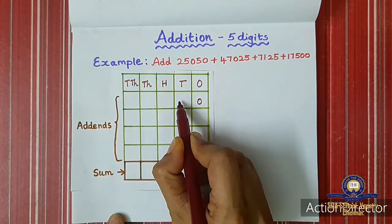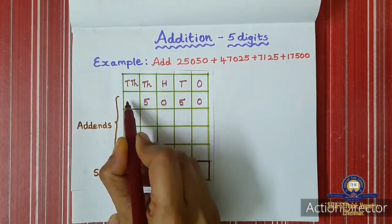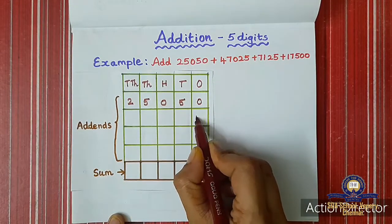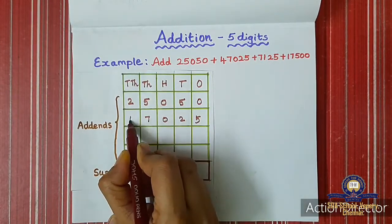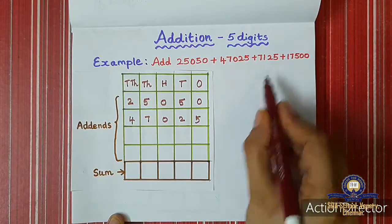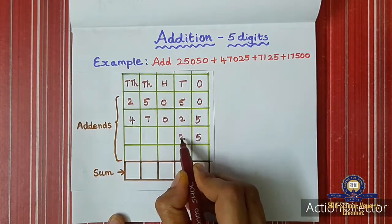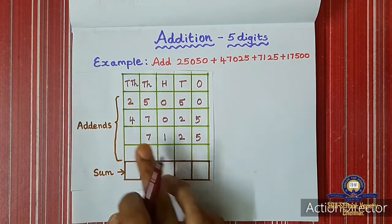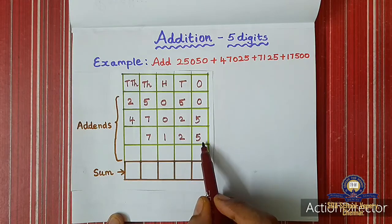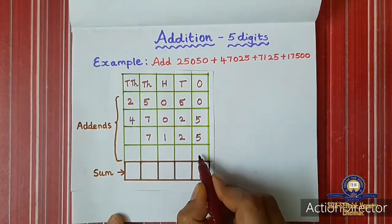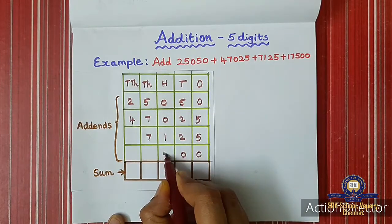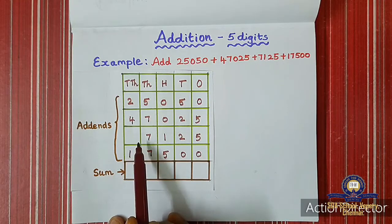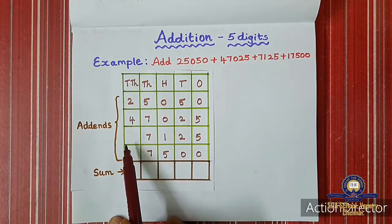Now writing the first number 25,050 starting from ones: 0, 5, 0, 5, 2. Then 47,025: 5, 2, 0, 7, 4. Then 7,125: 5, 2, 1, 7 — since this is a four-digit number, the ten-thousands box is empty. Then 17,500: 0, 0, 5, 7, 1. If a place has no digit, you can write zero there or leave it empty.